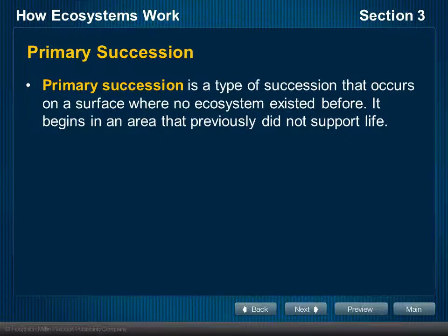The first stage is what we call primary succession. Primary refers to the first stage, and it's the term we give to the type of succession that occurs on a surface where no ecosystem existed before. You have an area that previously did not support life — an area that has been completely burned out due to fire or flood, or volcanic islands as we saw in the video about Hawaii. These are all examples where there was no life, everything was wiped out, it starts from scratch, and then a particular set of organisms begins to colonize that area. We refer to that as primary succession.